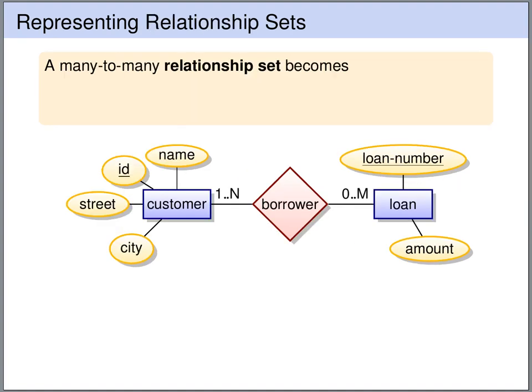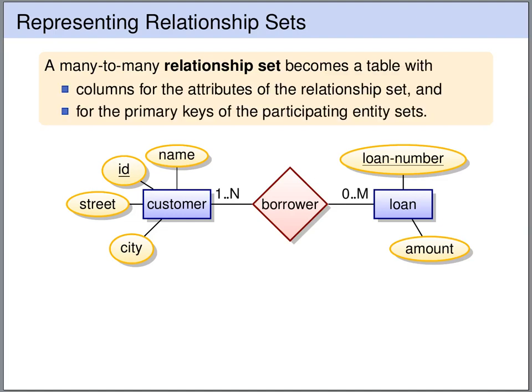A many-to-many relationship set is translated into a table that has columns for the attributes of the relationship set, plus columns for each of the primary keys of the participating entity sets. In this example, we have a borrower relationship set. It does not have any attributes, so we don't need any columns for the attributes, but we need to include the primary keys of both participating entity sets.